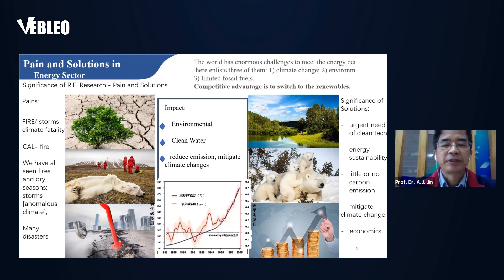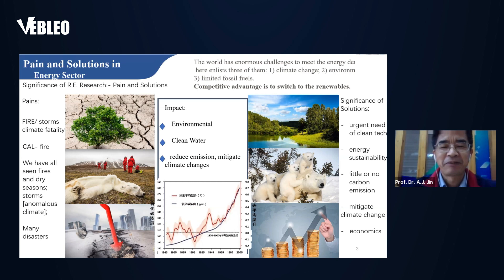Renewable energy would have good sustainability with little or no carbon emissions, and all of that can mitigate climate change. Shown in the middle lower portion is the temperature monitoring over the last 160 years by NASA. This graph clearly shows that the temperature of the Earth's surface is correlated with carbon concentration. The unit on the left-hand side is ppm of carbon dioxide.